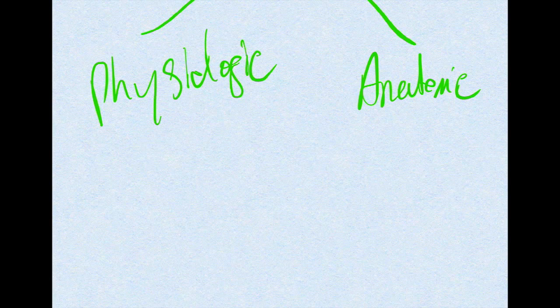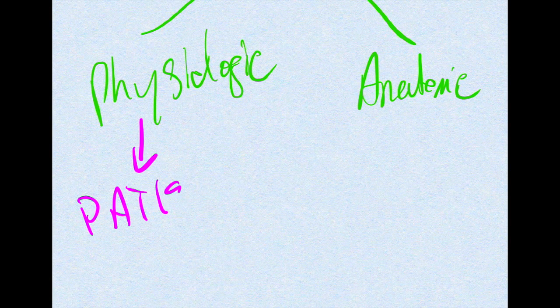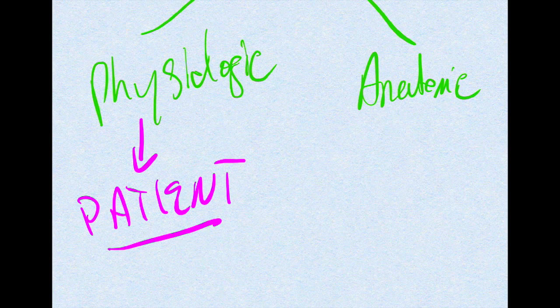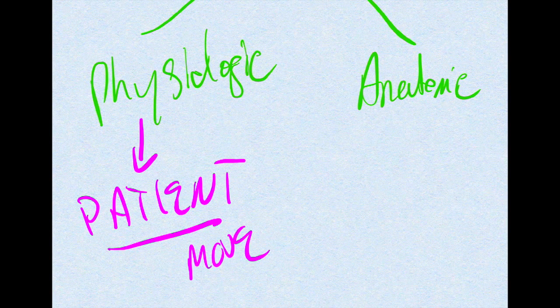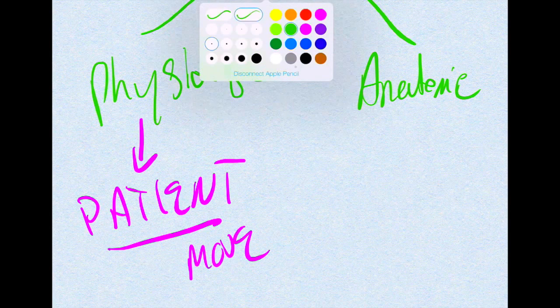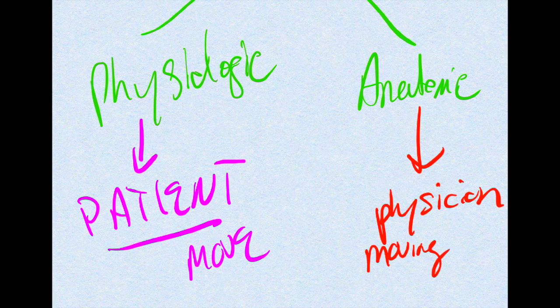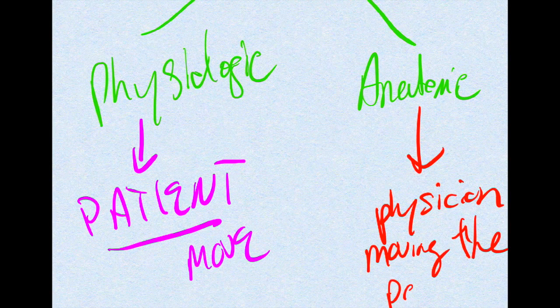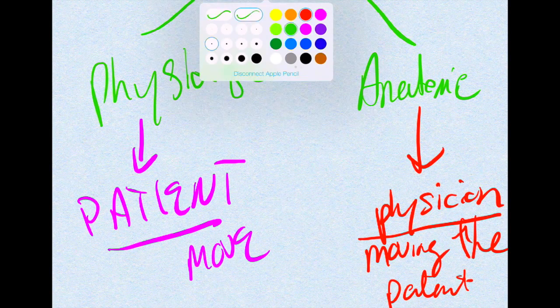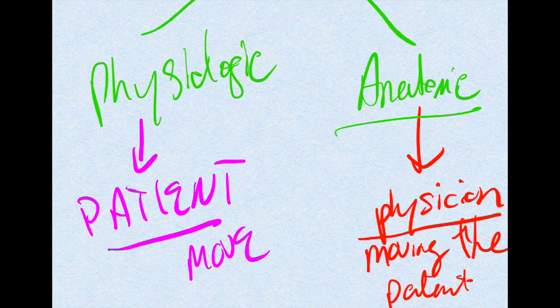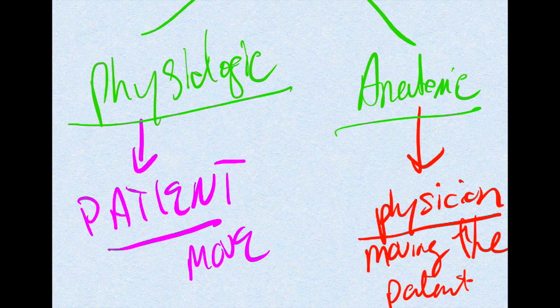In a physiologic barrier, it's all about how much the patient is able to move. As opposed to the anatomic barrier, where it's all about the physician moving the patient. And so anatomic is going to be physician, and physiologic is going to be where the patient actually moves.